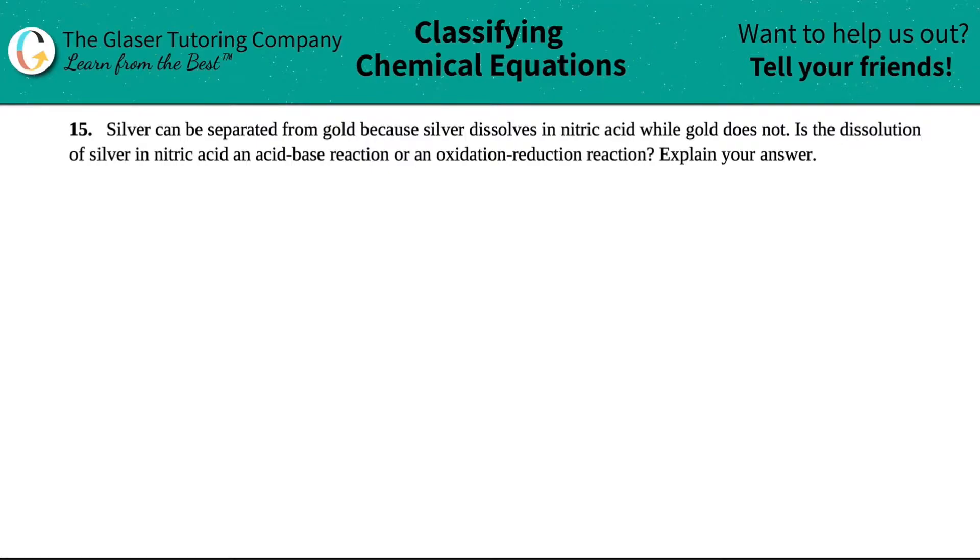Number 15. Silver can be separated from gold because silver dissolves in nitric acid while gold does not. Is the dissolution of silver in nitric acid an acid-base reaction or an oxidation-reduction reaction? And then explain your answer.